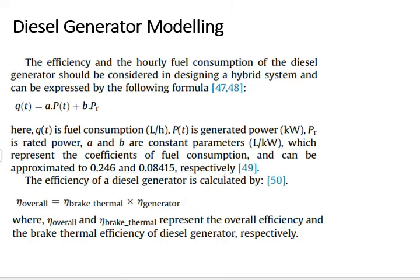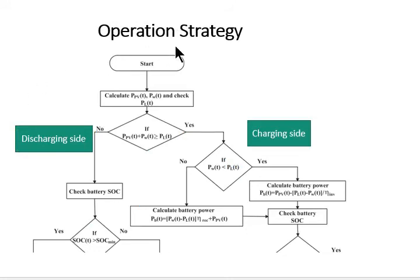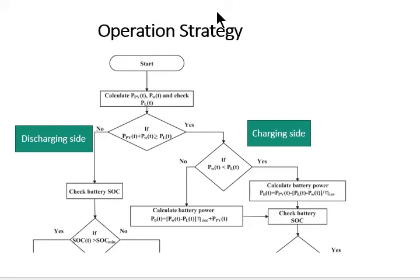The main objective of this study is to formulate a cost-effective and reliable hybrid energy system. The rating and sizing of solar PV panels, wind turbine, battery bank, and biomass gasifier are the main decision variables. In this section, the operational strategy of the system, objective function, and a brief introduction of the applied algorithm are presented.